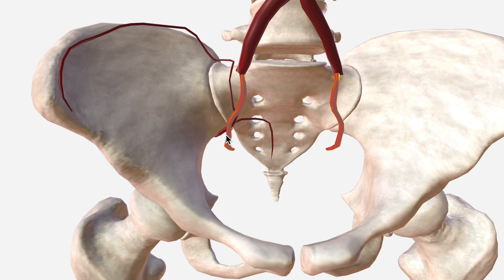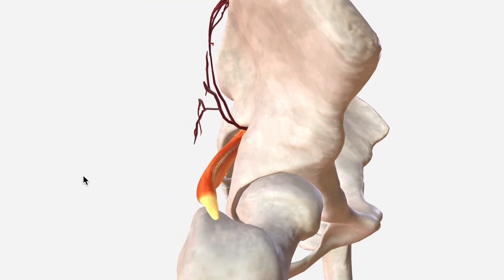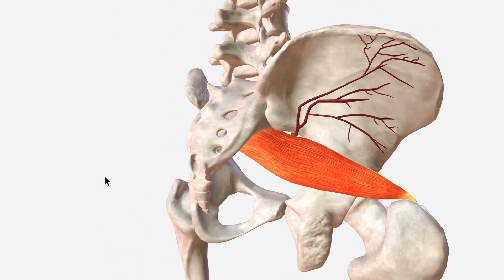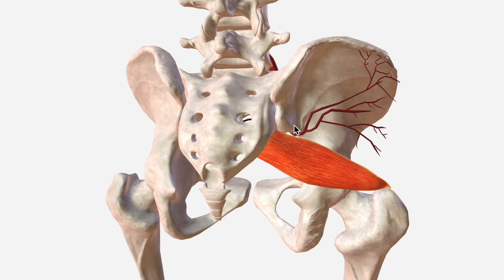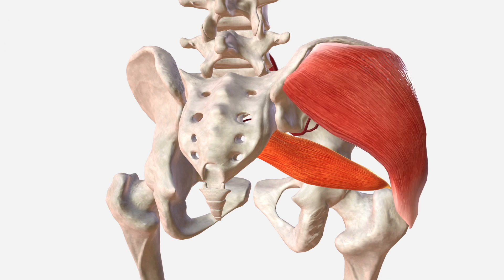Our last branch is the superior gluteal artery. It passes through the greater sciatic foramen above the piriformis muscle. Moving around posteriorly, we can see the superior gluteal artery passing through the greater sciatic foramen, superior to the piriformis, and supplying the piriformis along the way, as well as obturator internus and gluteus medius and minimus.